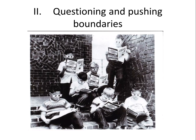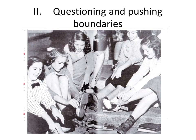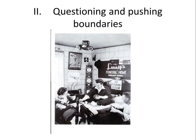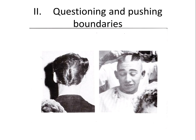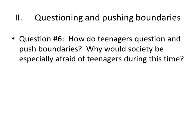Here are some teenagers trying to fit into a telephone booth. Here are boys reading comics — parents worried comics were teaching horrible things to kids. Girls exchanging socks as rebellion, a boy playing poker, probably having stolen signs. Here are the hairstyles: the ducktail on the left — like the zoot suiters — and one of the strangest haircuts, the Apache, which is the opposite of a mohawk — shaving down the center of the head. How do teenagers question and push boundaries, and why would society be especially afraid of them?